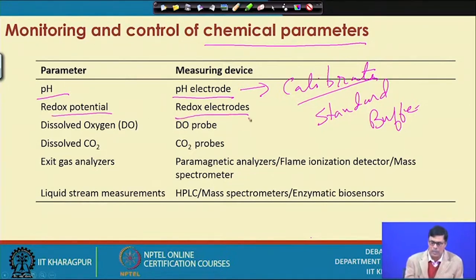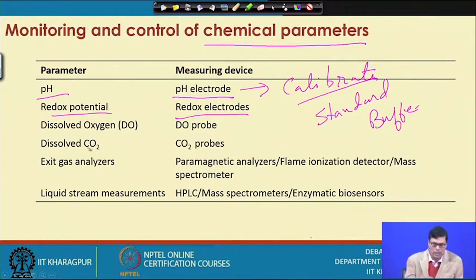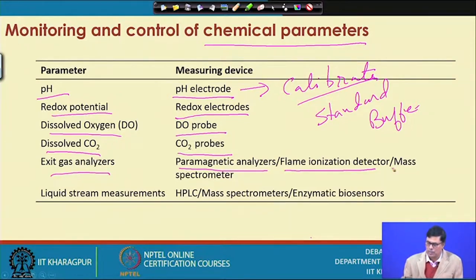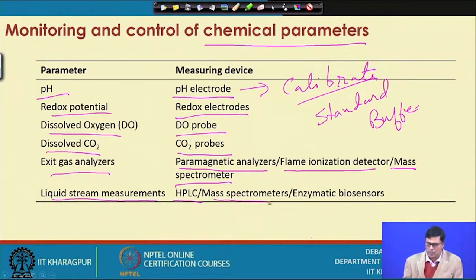Redox potential is also measured — it is the oxidation-reduction potential of the liquid. The dissolved oxygen probe is used with a DO probe. Dissolved carbon dioxide and exit gas analysis can be done by paramagnetic analysis, ionization detector, or mass spectrometer. Liquid stream measurements are done by HPLC, mass spectrometer, and enzymatic biosensors.